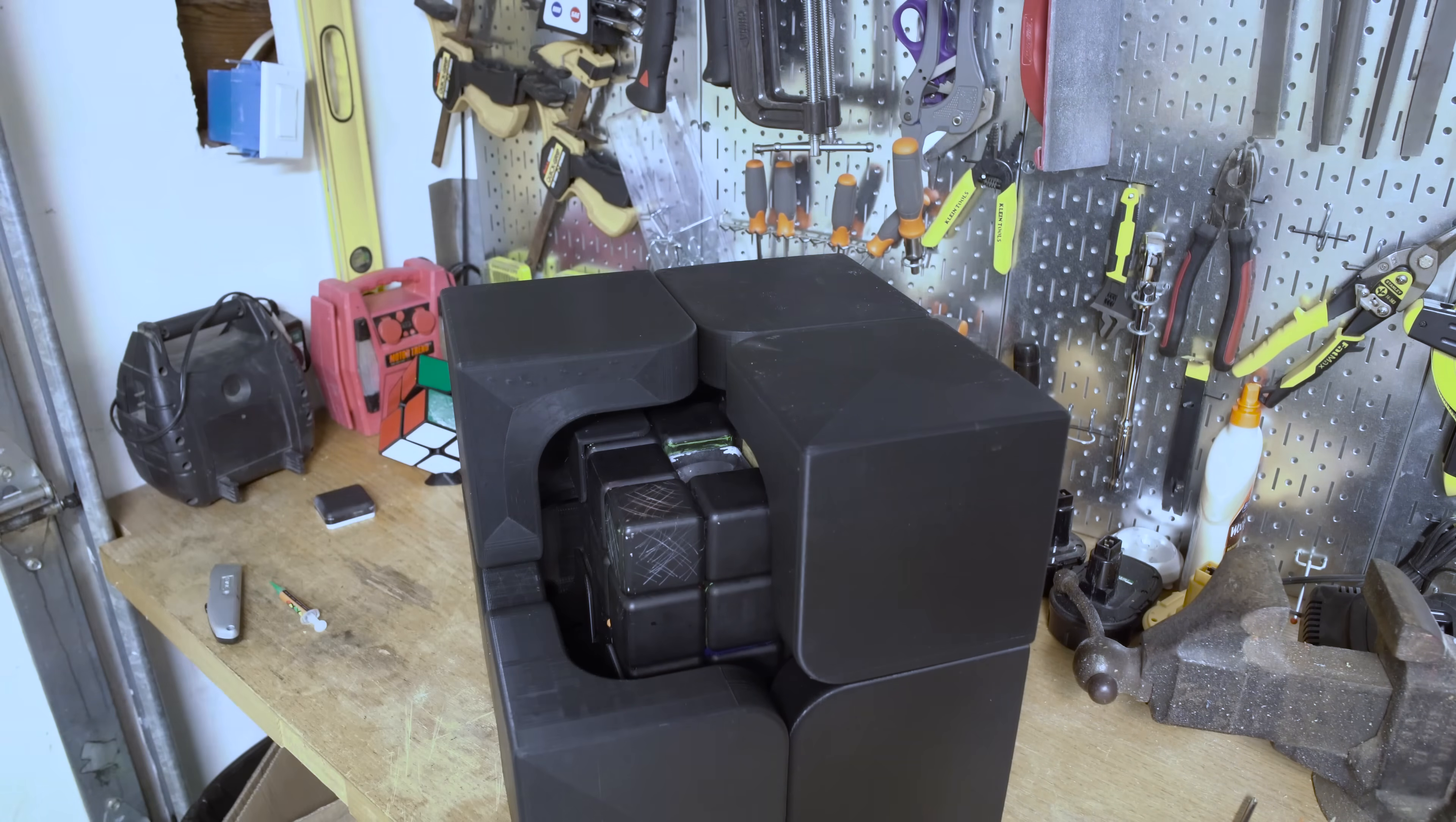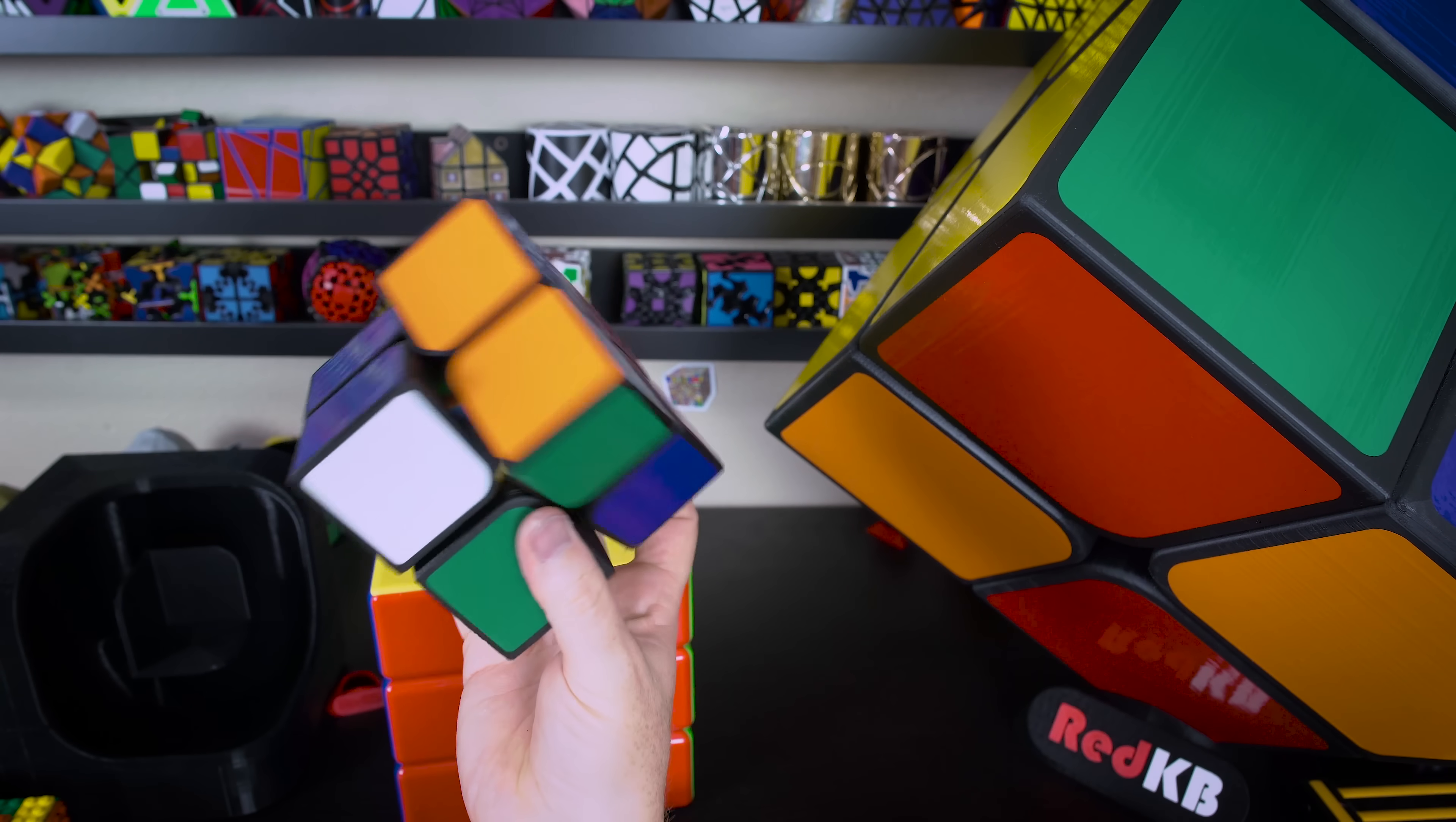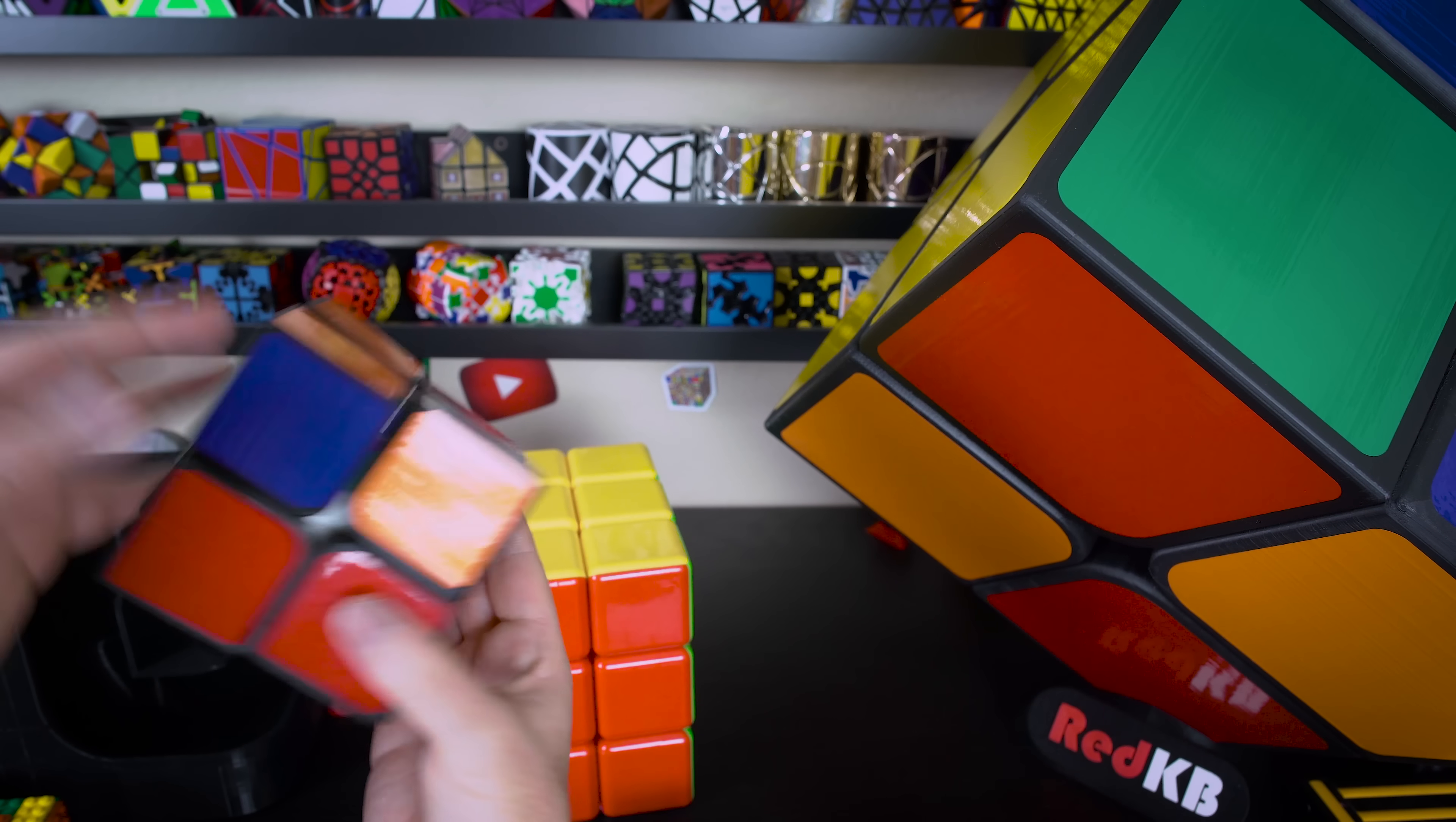Once the cube was all together I had to get the stickers. For the stickers I actually reached out to Oliver's Stickers. A lot of you guys know Oliver's Stickers, they make all sorts of custom stickers as well as replacement stickers. I reached out to them and they were nice enough to cut these great looking stickers. They cut them for my prototype as well as my giant 2x2 and I think they look great. So huge thanks to Oliver.